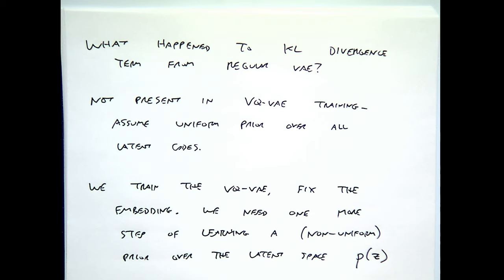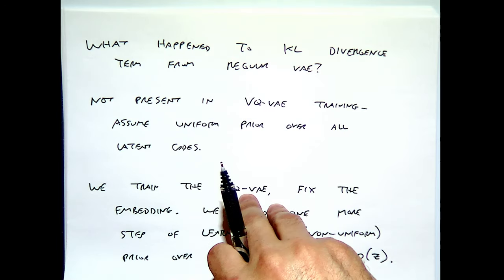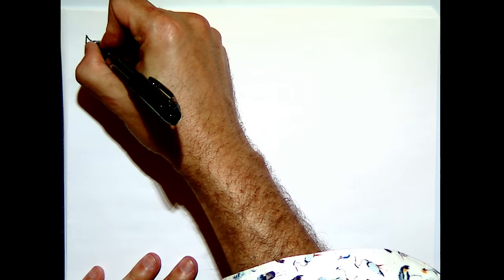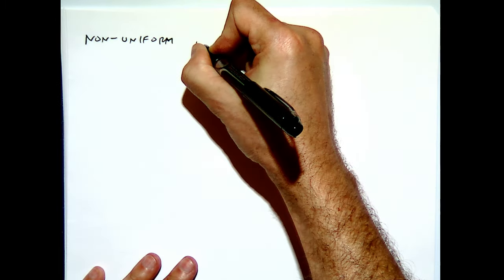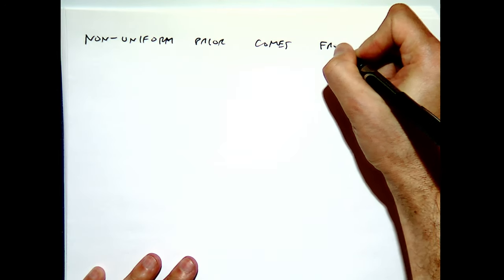One way to think about this is that if the prior is non-uniform, we can compress the image into even fewer bits — similar to Huffman coding, where you assign short codewords to frequent symbols like E and A, and long codewords to rare ones like Z and Q. We want to learn a non-uniform prior to be as compact as possible. This non-uniform prior is learned using a model called PixelCNN.